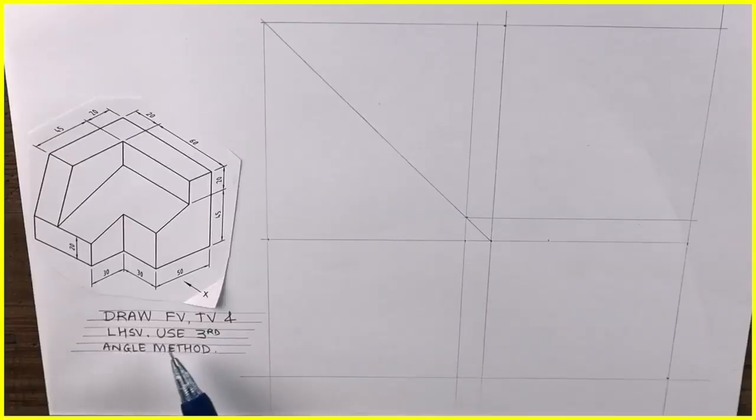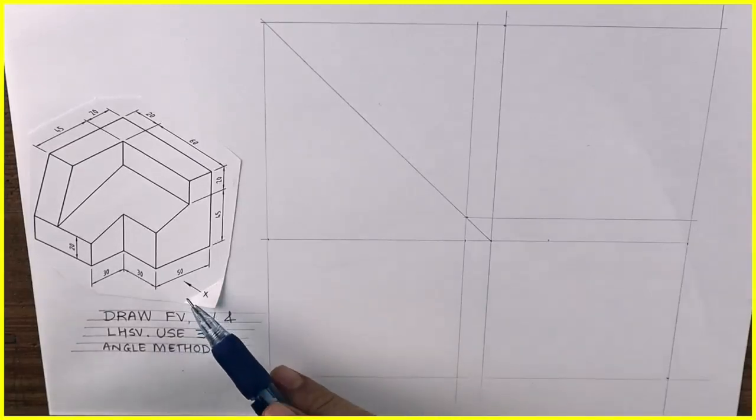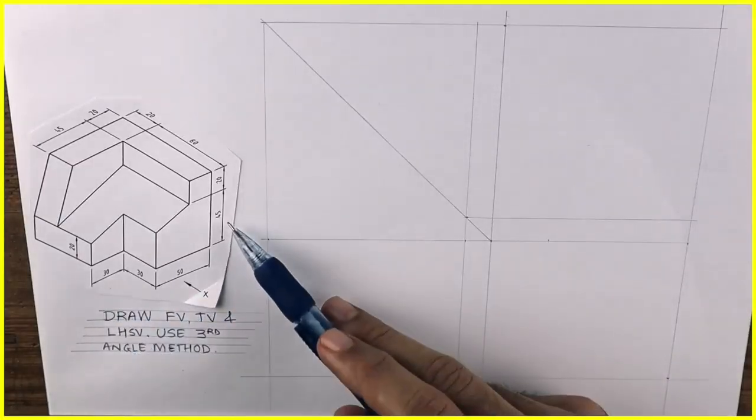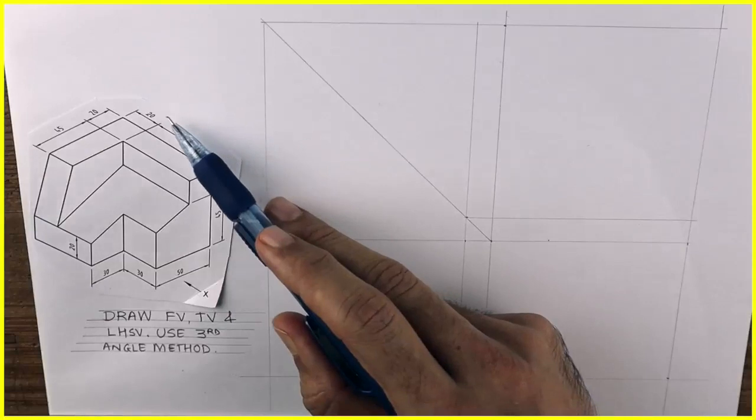Welcome to technical drawing. In this sum we'll draw front view, top view, and left hand side view using third angle method. When the observer sees from here, they can see length which is 80 (50 plus 30), height is 65, and width is 80.